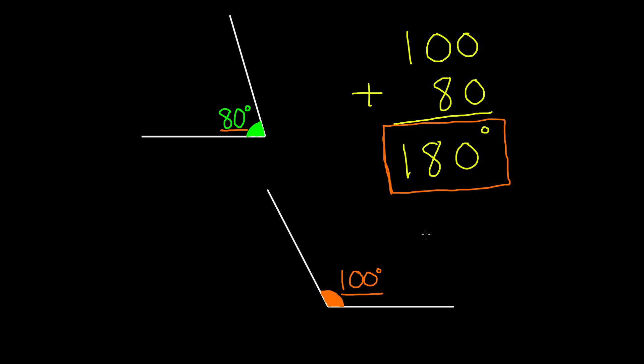So supplementary angles are pretty much two angles that are either close by or apart from each other, but when their measurements are added together, it equals exactly 180 degrees and that's why they're considered supplementary angles.